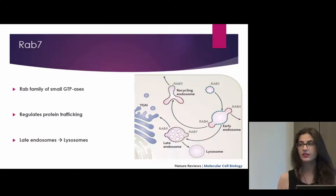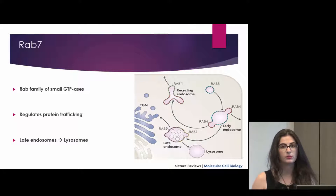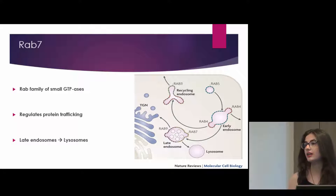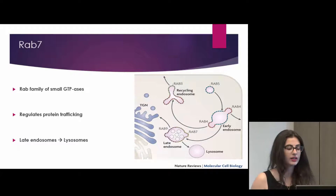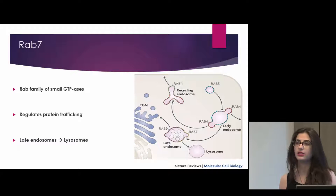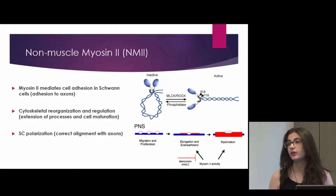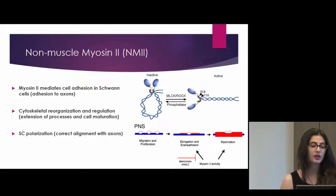RAB7 is a small protein found on the membrane of late endosomes. It regulates protein trafficking, and anything that's inside a RAB7 vesicle is usually headed to the lysosome for later degradation. RAB7 has also been found to interact with non-muscle myosin-2 in other cell types.